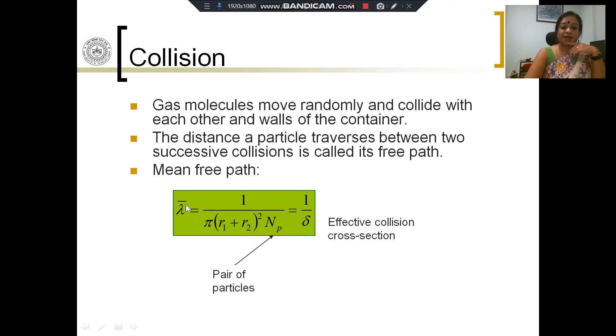The mean free path λ̄ is equal to 1/δ. δ is the effective collision cross section. This essentially gives us an idea about the probability of a particular kind of collision happening. A particular kind of collision between a pair of particle types is given by the effective collision cross section and it is related to the mean free path between these particles.